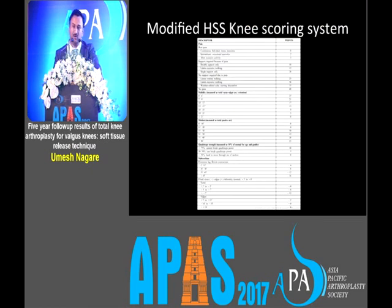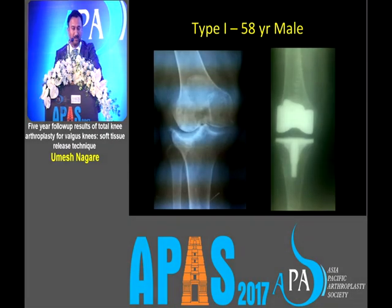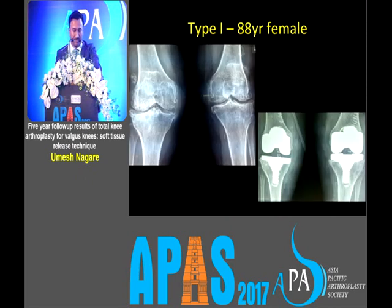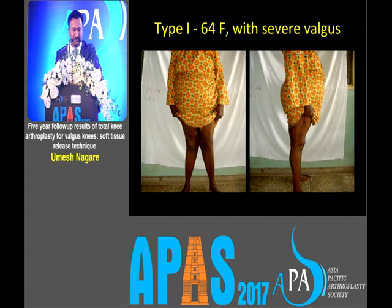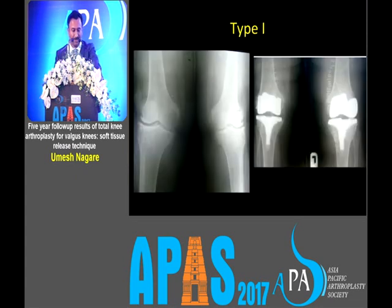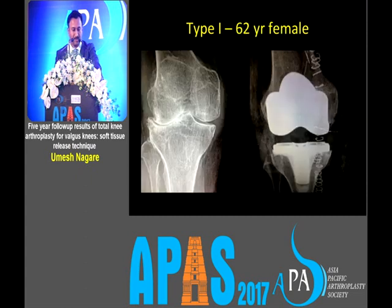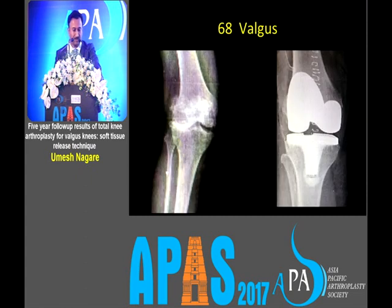We used a modified Hospital for Special Surgery knee scoring system. I will show a few X-rays. Type 1: a 58-year-old male who had a valgus deformity pre- and post-op. This is bilateral valgus type 1. We had a 64-year-old with bilateral valgus pre- and post-op — again, a type 1 patient.